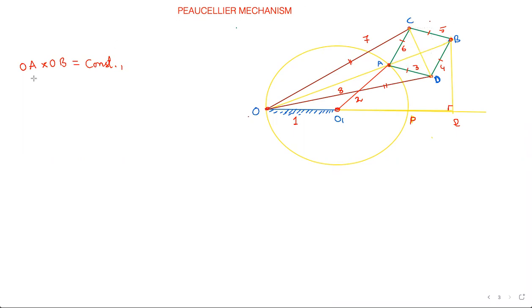Now my proof is what? OA into OB is constant. Let's start from there. What is OA? Let's call this point, we'll give some name to this point, maybe this is S. Point S - the point of intersection will be point S.